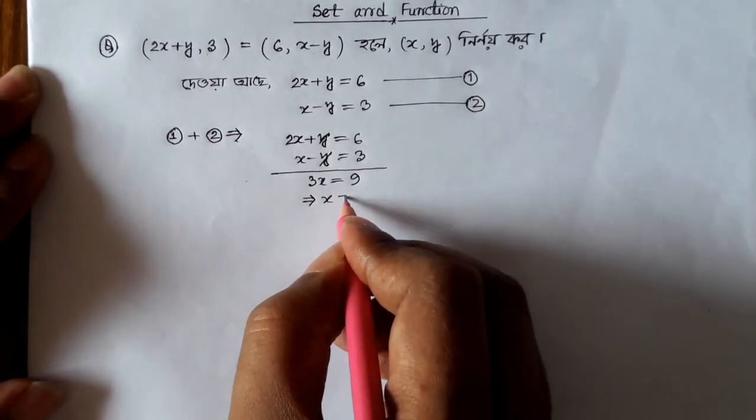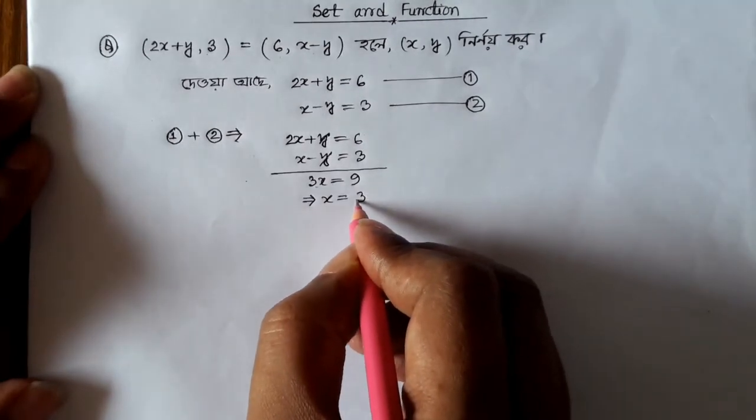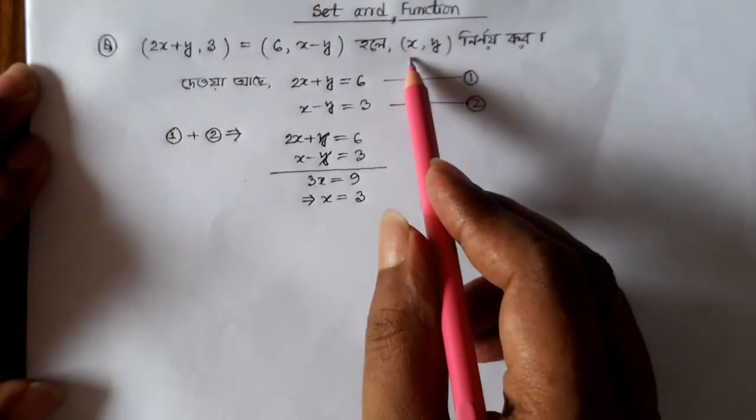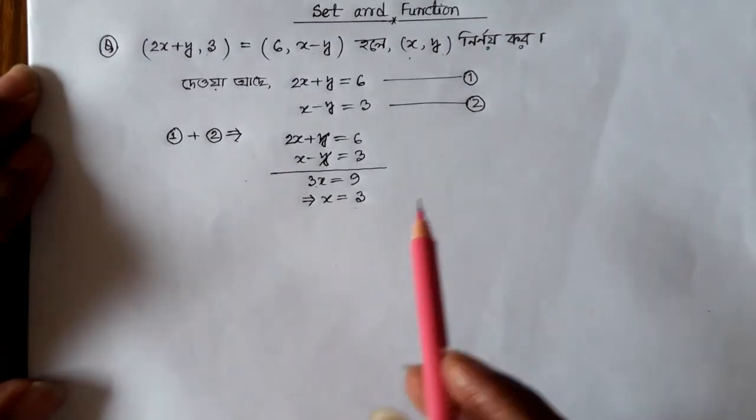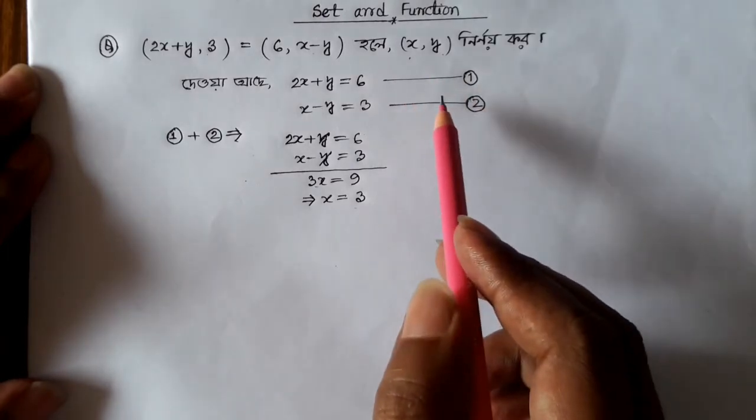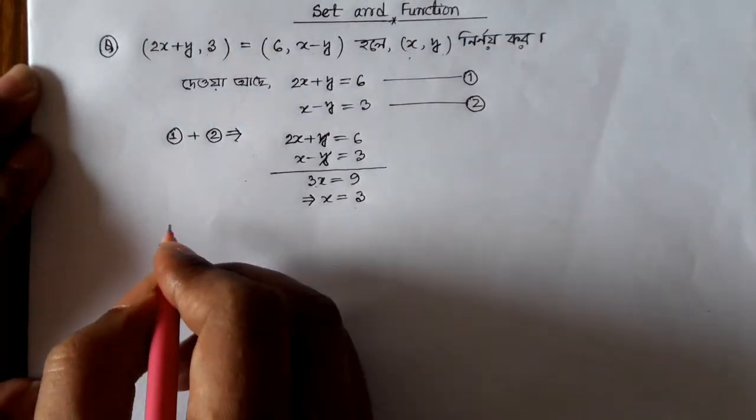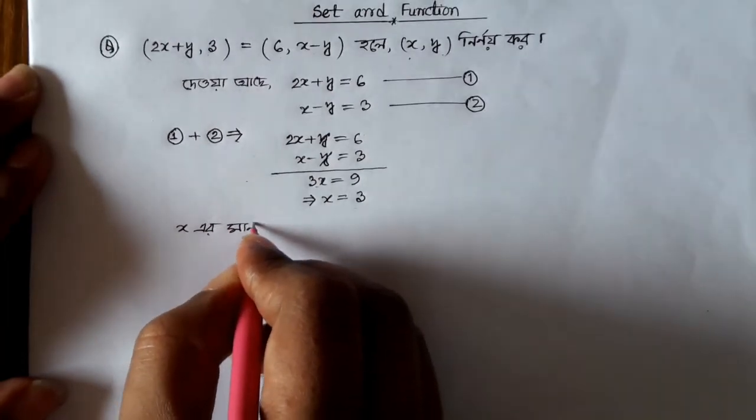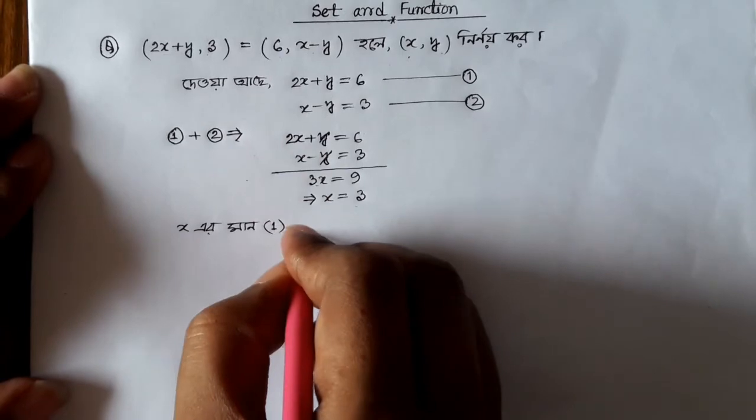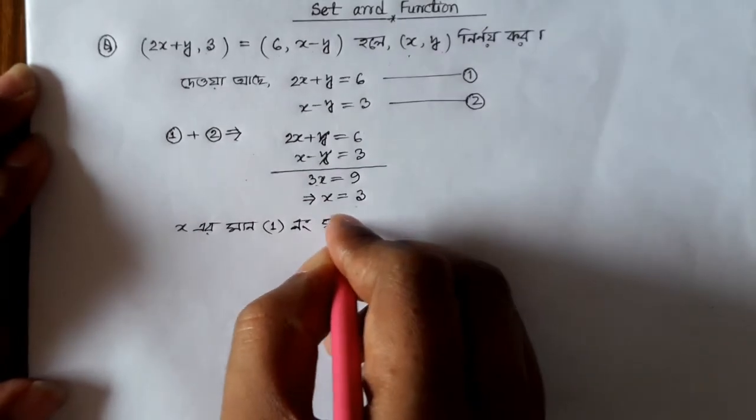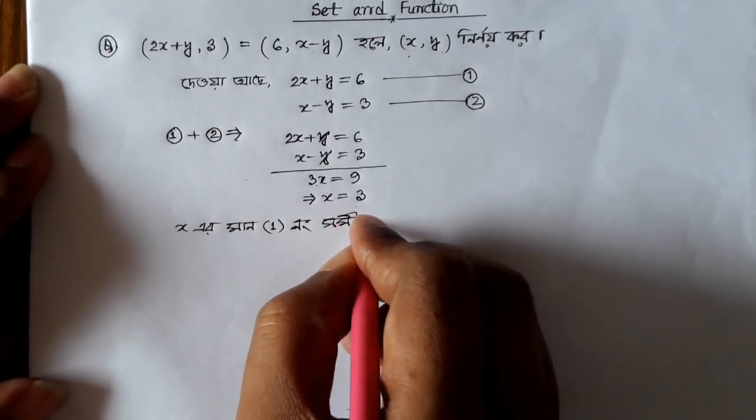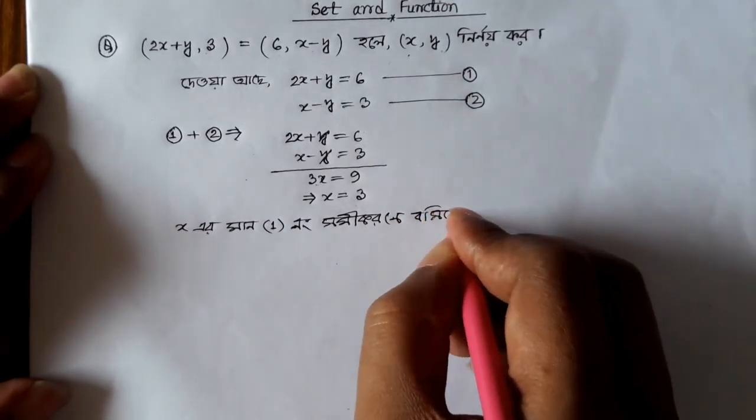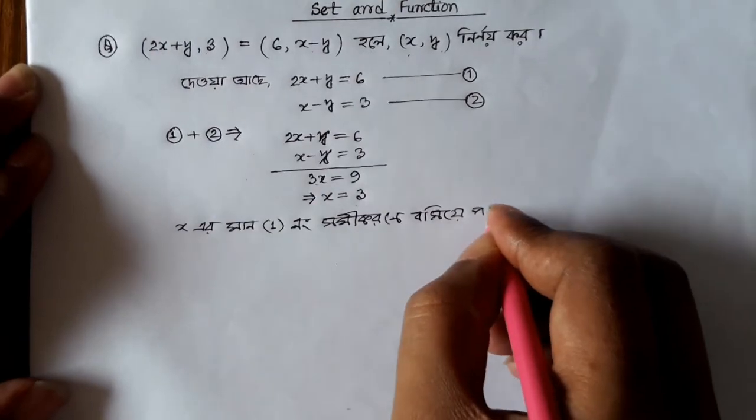Now that we have x equals 3, we can find y. Using the equation x minus y equals 3, we substitute x equals 3. This gives us 3 minus y equals 3, so y equals 0.